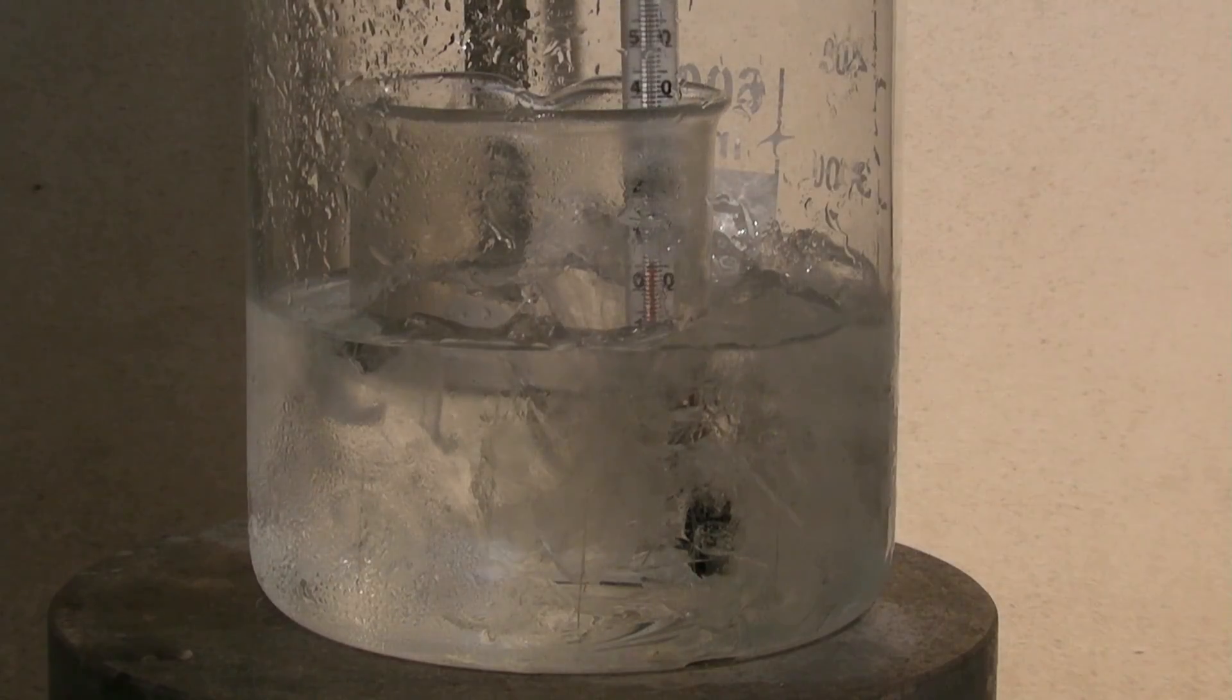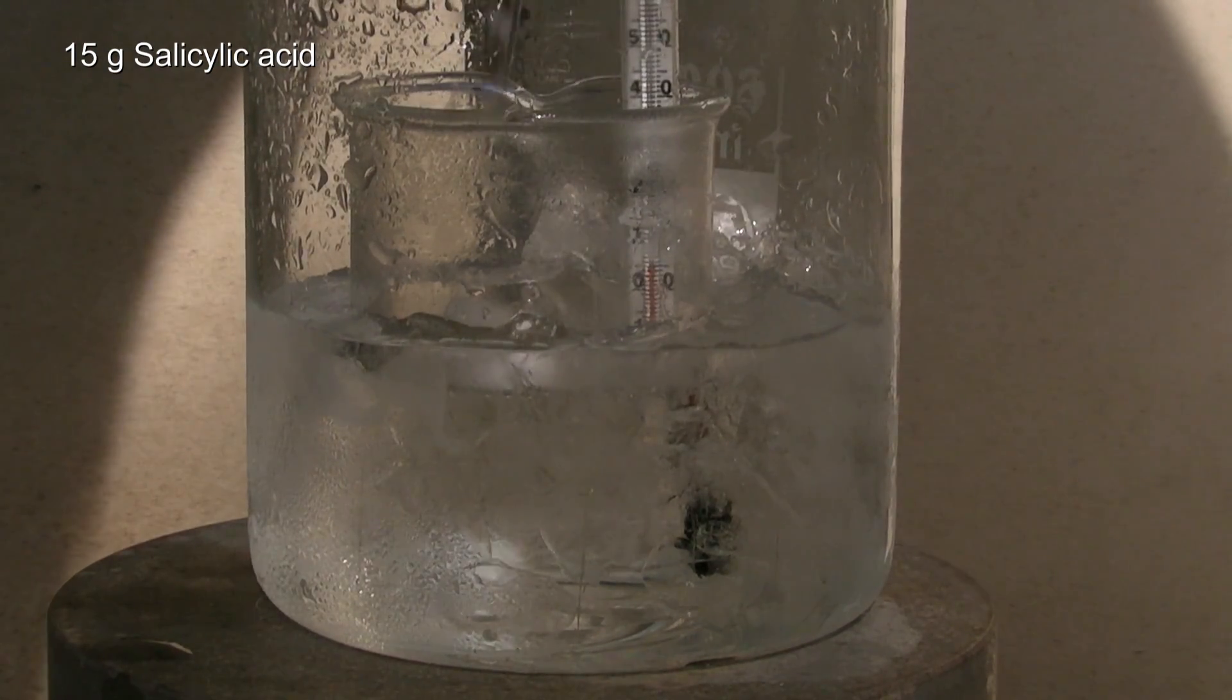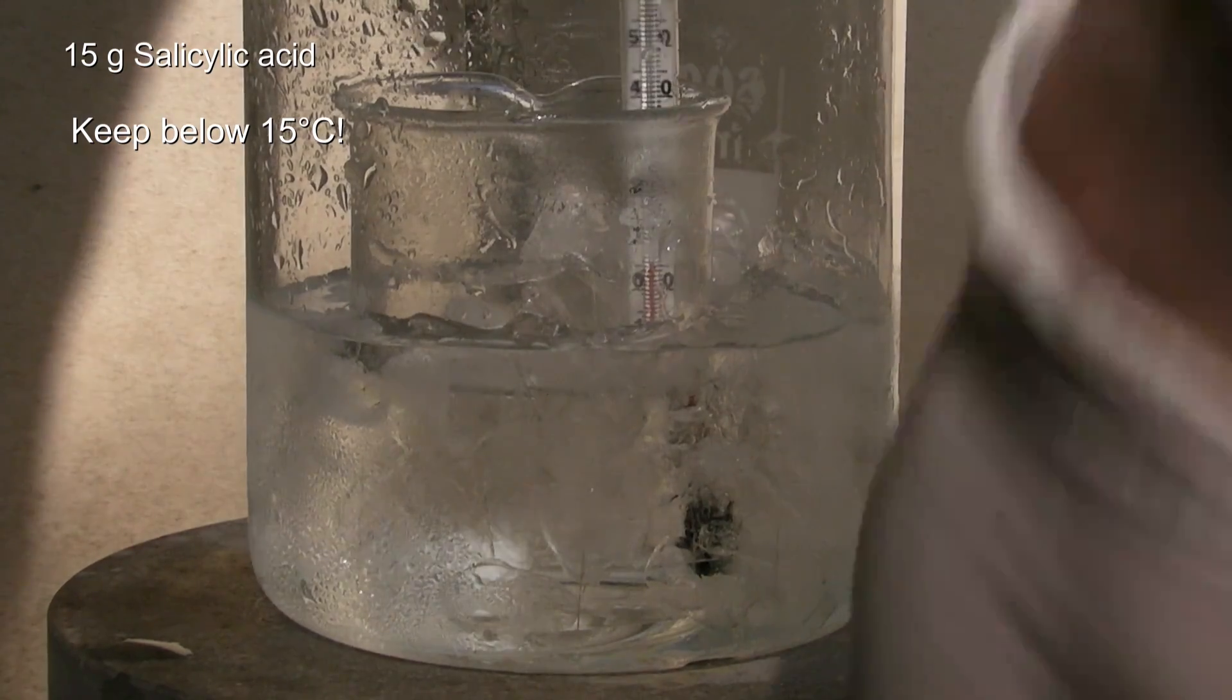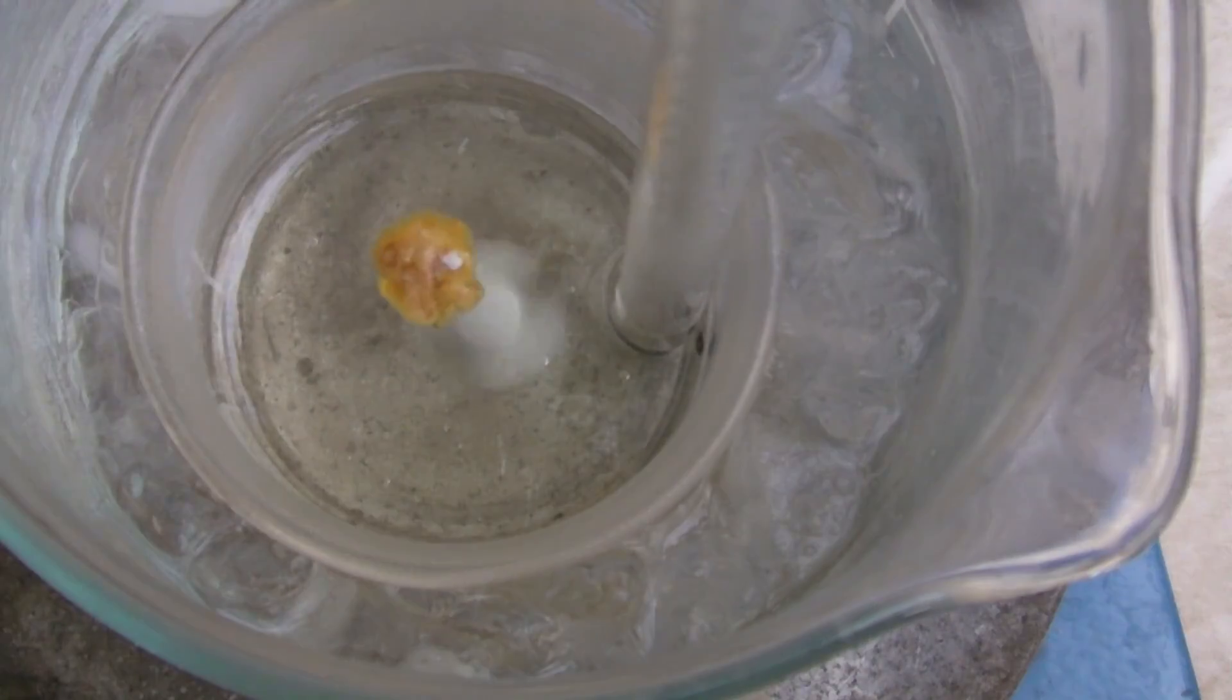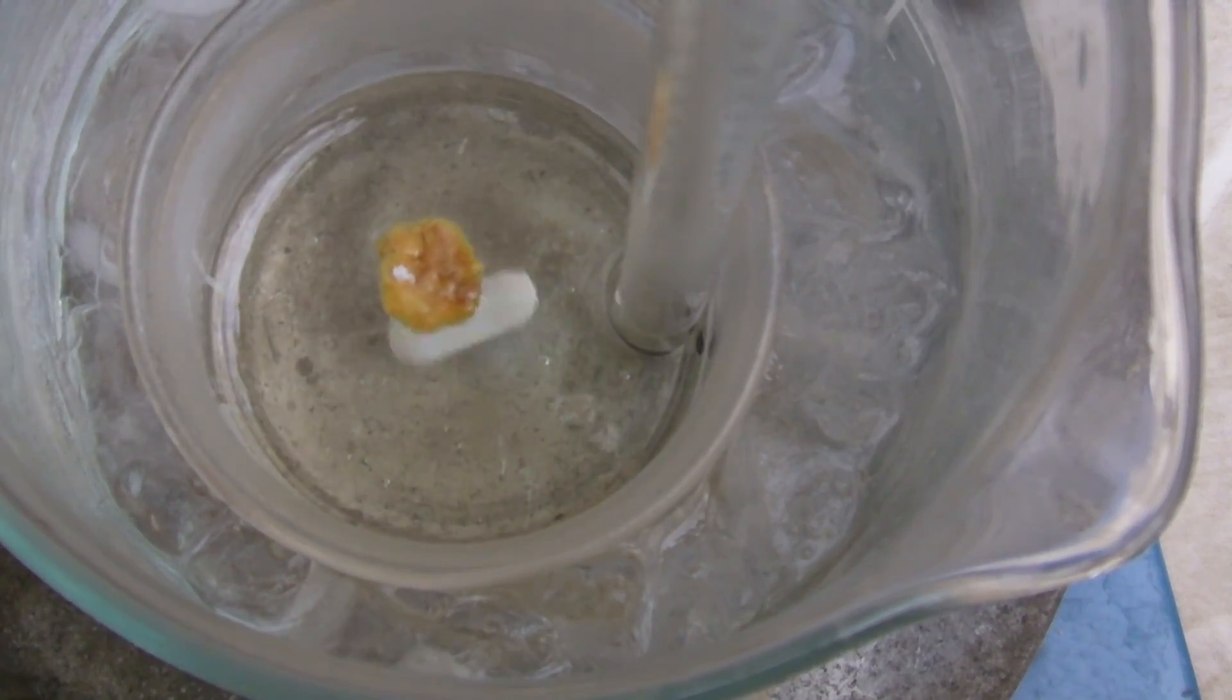While stirring, 15 grams of salicylic acid were added in small portions. It's important that the temperature must not rise above 15 degrees C. At this point, the stirring bar turned out to be too small, because the viscosity of the mixture was too high to stir it sufficiently.